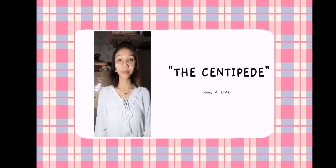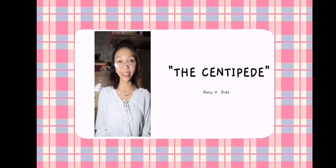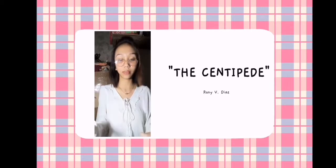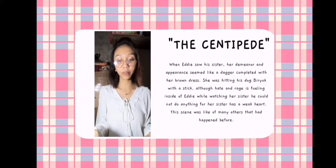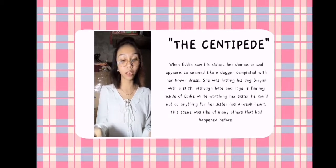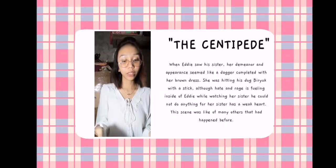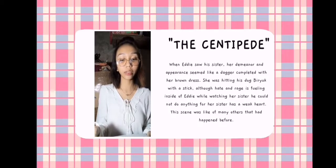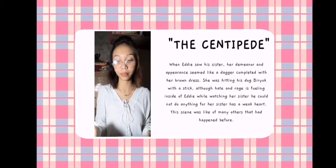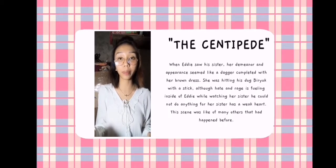Good day everyone, I'm Teacher Karen. We're going to discuss The Centipede by Ronnie B. Diaz. Are you ready students? Let's go. The Centipede: When Eddie saw his sister, her demeanor and appearance seemed like a dagger completed with her brown dress. She was hitting his dog Biruk with a stick. Although hate and rage is fueling inside of Eddie while watching her sister, he could not do anything because she has a weak heart.